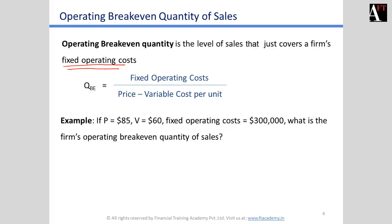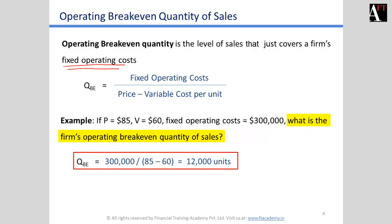Let's take another example. The sales price is $85, variable cost is $60, and fixed operating cost is $300,000. Find the firm's operating breakeven quantity of sales. Applying the formula: fixed operating cost of $300,000 divided by contribution per unit of $85 minus $60, which equals $25, gives us an operating breakeven quantity of 12,000 units.